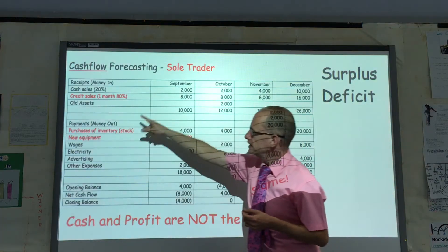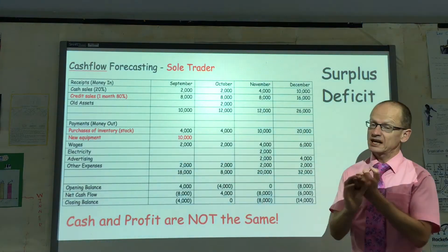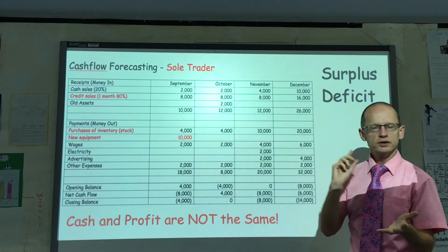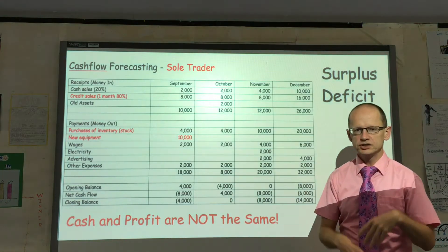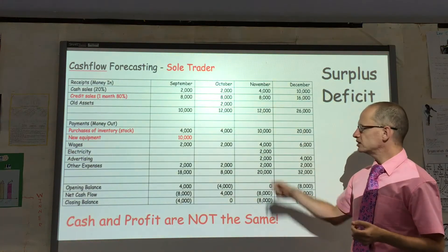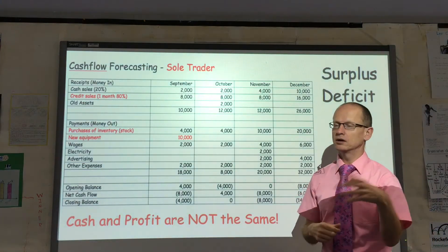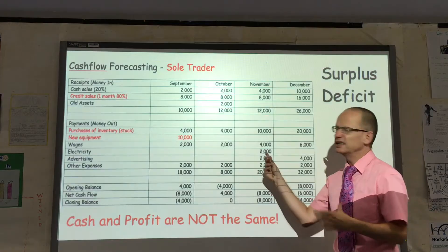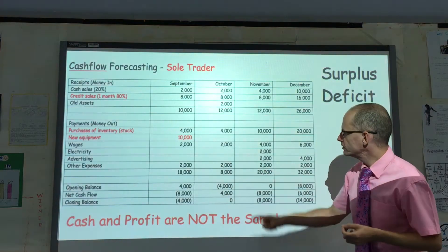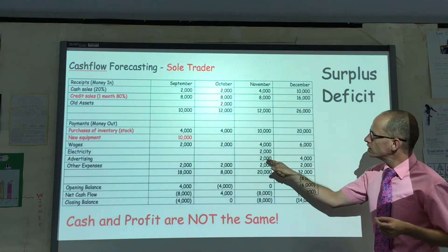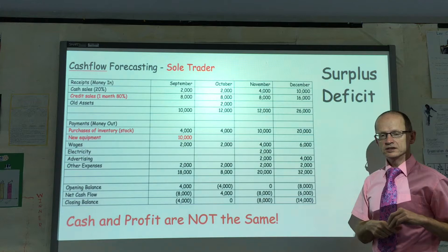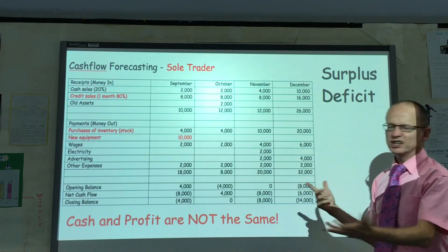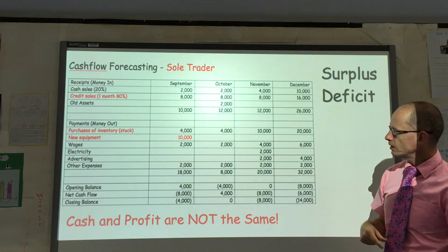The payments section is the money out. Obviously the business has to purchase stock. In September it buys new equipment. There are wages and electricity — electricity in many instances can be paid once every three months; sometimes it's paid every month; I've said every three months here. Advertising only occurs in November and December because it's a seasonal business. Other expenses are December 2,000.